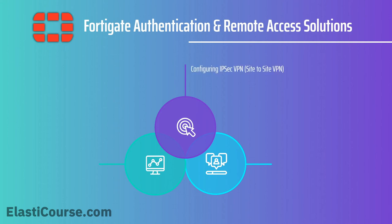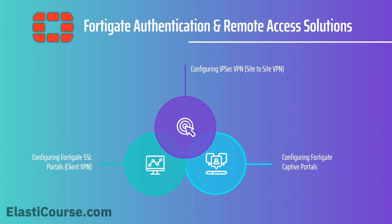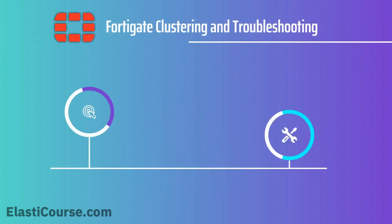Next we will discuss the FortiGate authentication and remote access solutions. For this section we will focus on IPsec VPN, which is a very famous solution to build site-to-site VPNs and connect sites over the internet securely. We will also cover FortiGate SSL portals, also known as client VPN or work-from-home VPN, FortiGate captive portals for user authentication before granting resource access, and finally how to build a FortiGate cluster using the HA protocol and how to troubleshoot common FortiGate issues.